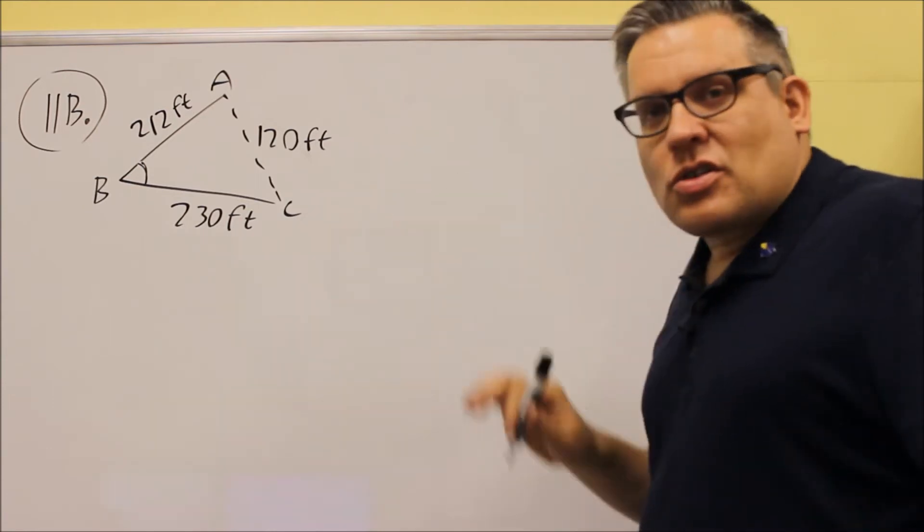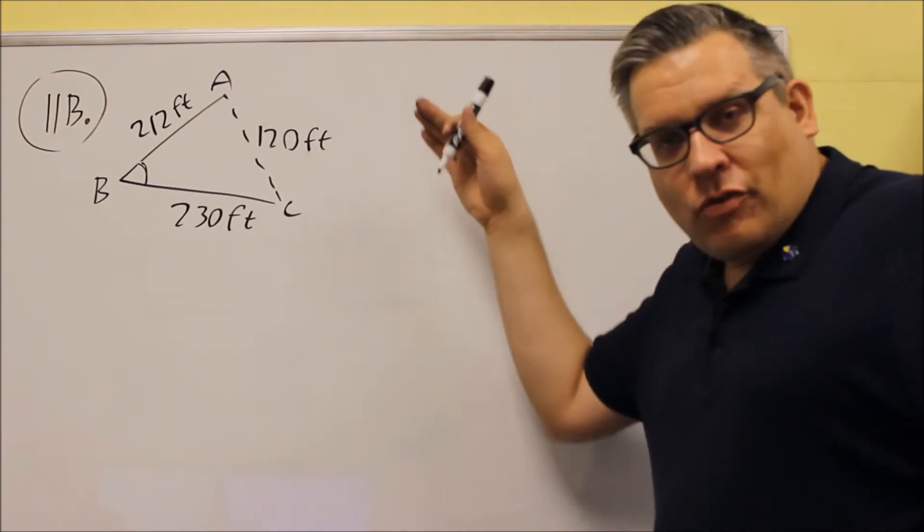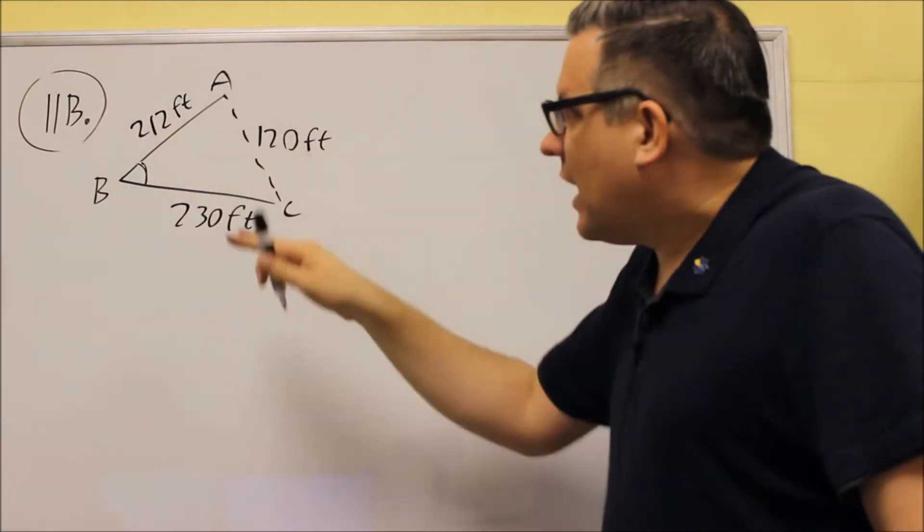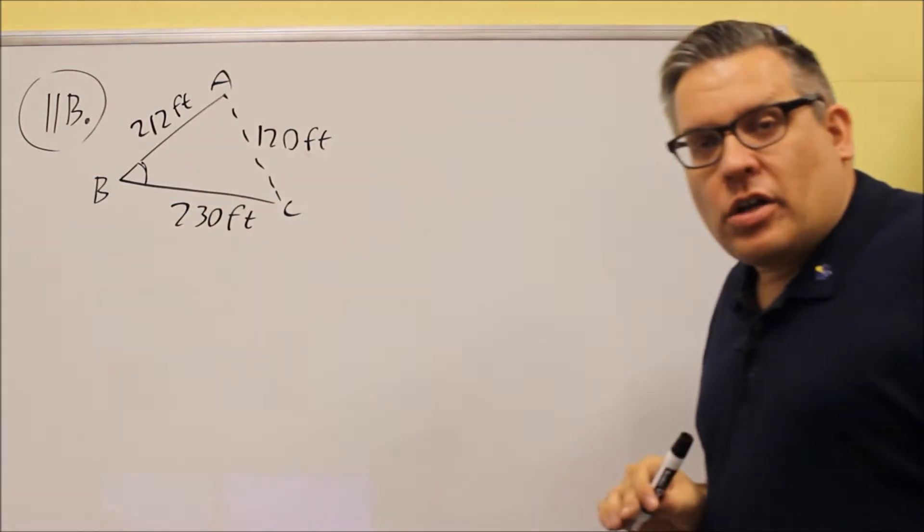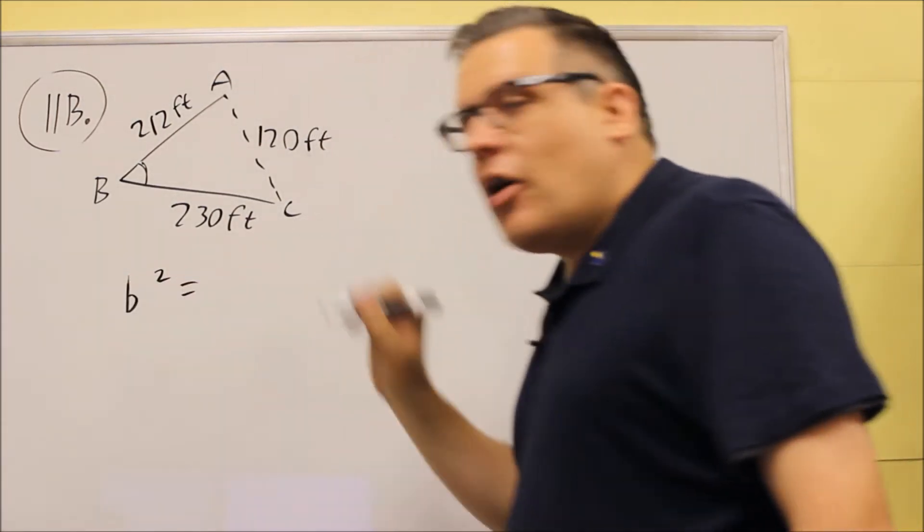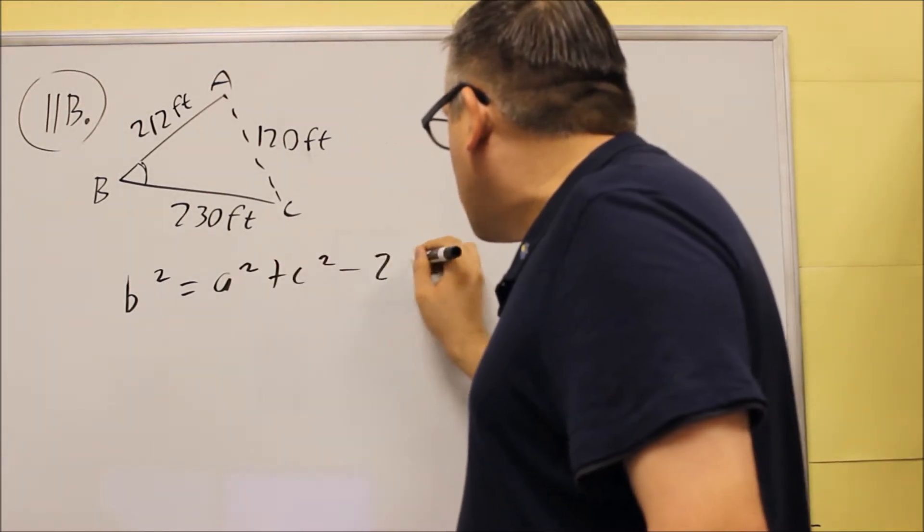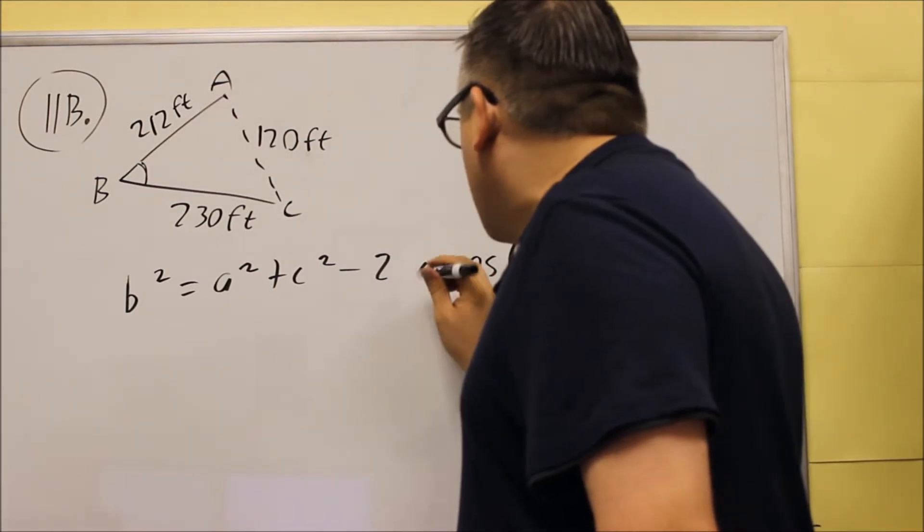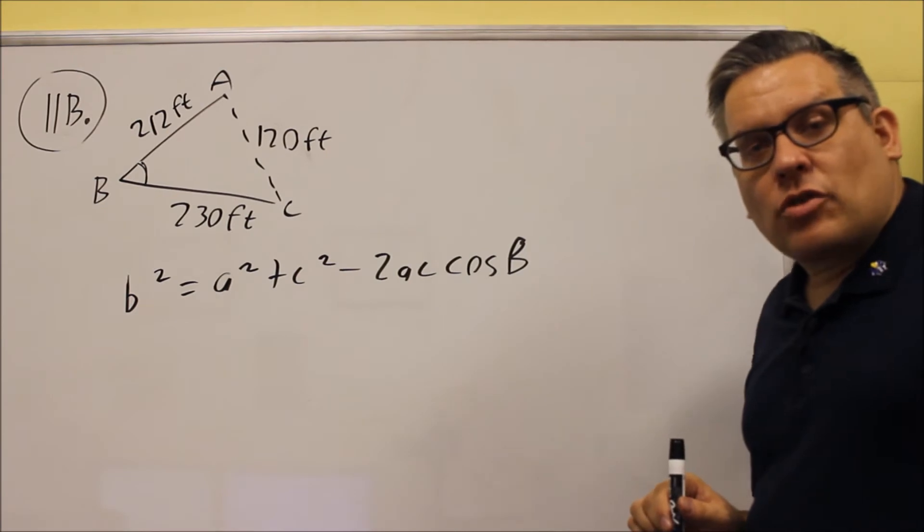Now, the way this is labeled, as I said before in the previous problem, the version of the law of cosines formula you're going to use depends on how you have your triangle labeled. Because I want to solve for this angle B right here, that means that I want to use this version of the law of cosines. So, I'm going to do B squared equals A squared plus C squared minus 2AC cosine B.